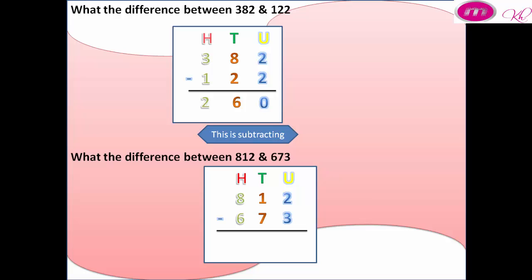We cannot subtract 3 from 2, so we borrow 1 from the tens. Two becomes 12 and 1 becomes 0. Twelve minus 3 equals 9.